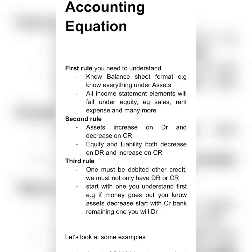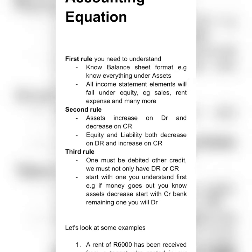The second rule you need to understand is that if you are dealing with an asset — it doesn't matter whether it's a non-current asset or a current asset — you have to know that an asset increases on the debit side and decreases on the credit side. You have to know this rule in and out. When we go to equity and liability, these two accounts both decrease on the debit and increase on the credit. They are opposite to an asset.